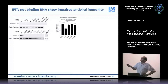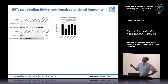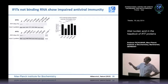Looking at antiviral activities of IFIT5, the wild-type protein inhibits growth of vesicular stomatitis virus and GFP expression from a GFP-expressing VSV variant. If you overexpress mutated versions that no longer bind to PPP RNA, this antiviral activity is lost, clearly showing that the ability to bind RNA is important for antiviral activity.